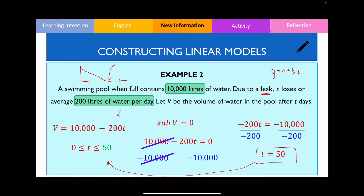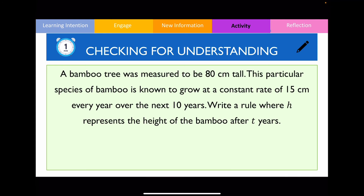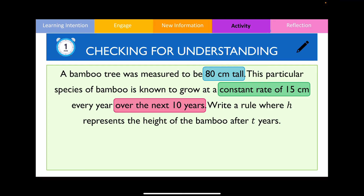Now have a go at writing your own linear equations including the domain. This question says the bamboo is initially 80 centimeters tall — that's the y-intercept. It grows at a constant rate of 15 centimeters — that's the gradient. It grows at a constant rate for 10 years — that's the domain. So the equation is h = 80 + 15t, with domain 0 ≤ t ≤ 10.